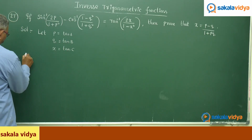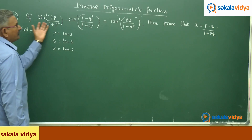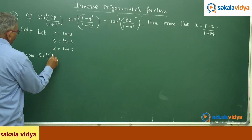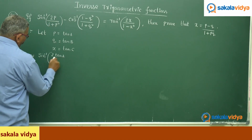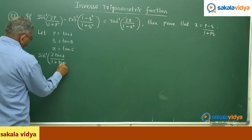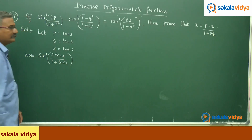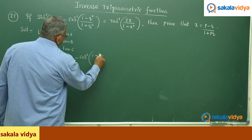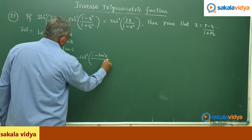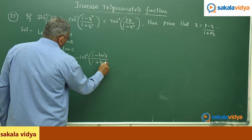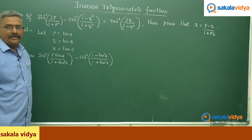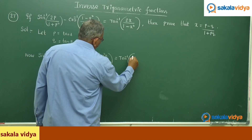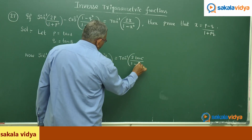So now, according to the given expression we can write this as sin⁻¹(2 tan a/(1 + tan²a)) minus cos⁻¹((1 - tan²b)/(1 + tan²b)) is equal to tan⁻¹(2 tan c/(1 - tan²c)).